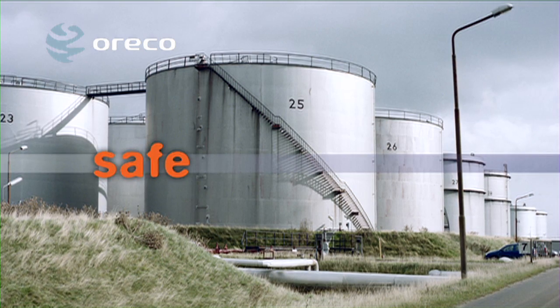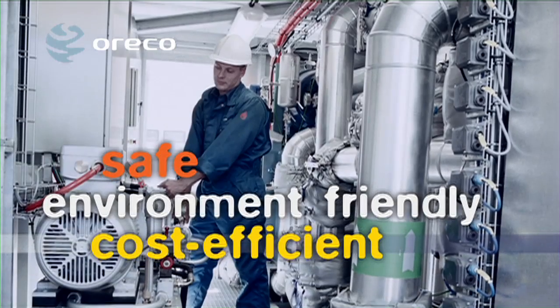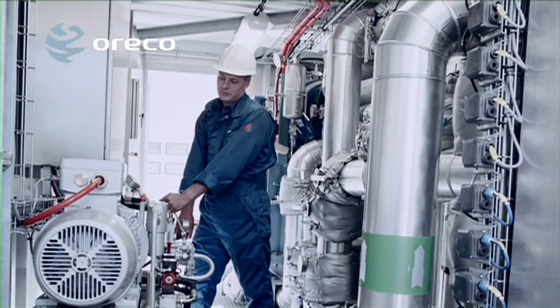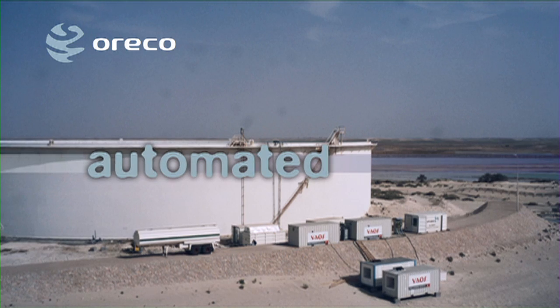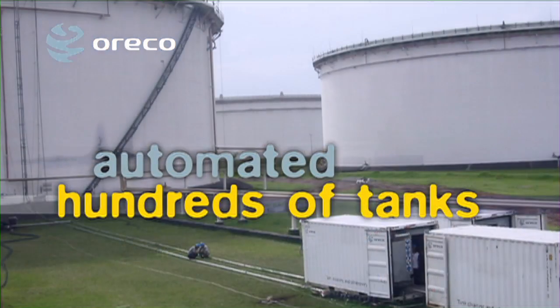The Blabo system sets new standards for safe, environmentally friendly and cost-efficient tank cleaning. Around the world, the automated Blabo method has been used to clean hundreds of oil storage tanks with fixed and floating roofs.